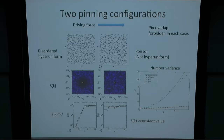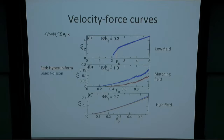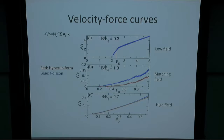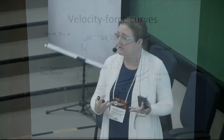We can also look at the number variance measurement, which should go linear with r for our hyperuniform system and faster — as r squared — for our random system. We apply driving force to the vortices and look at the velocity-force response at different fields, comparing at the matching field, below, and above. Red is the hyperuniform system. We get an enhanced critical current for the hyperuniform system. At low fields, once the vortices de-pin, they flow essentially the same in both systems. Close to matching, we still see the enhancement of the critical current, and even once the vortices are flowing, they're flowing more slowly through the hyperuniform arrangement compared to the Poisson arrangement. At higher fields, vortex-vortex interactions become more important and start to wash out the effects of the pinning, but we're still getting an enhancement even in the flowing state.